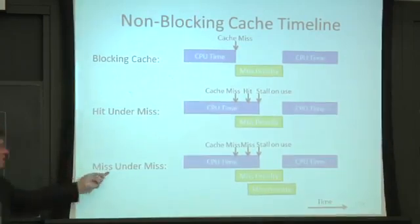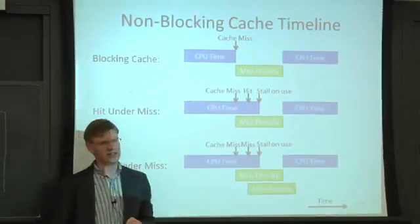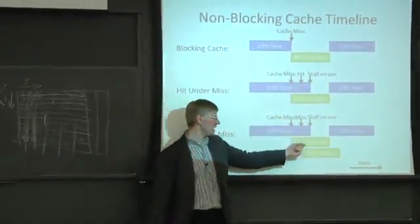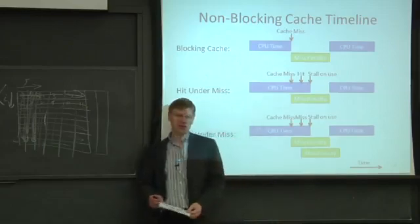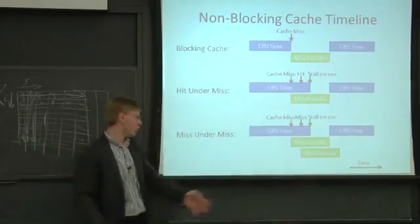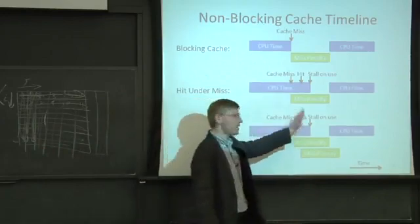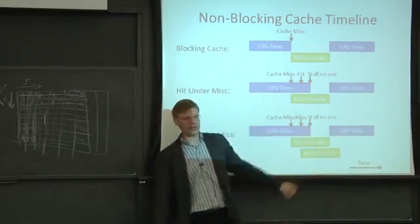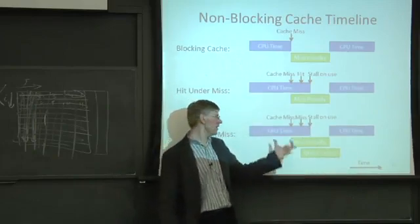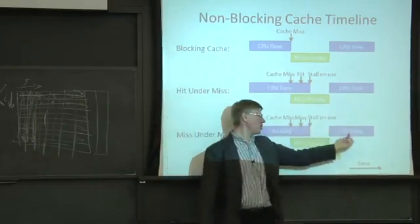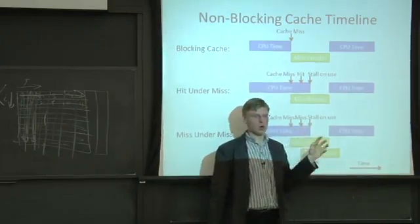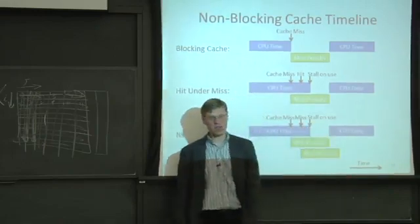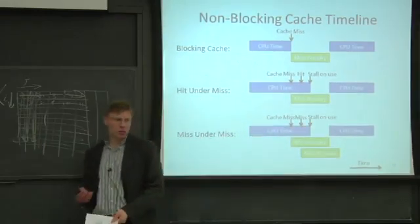Something else we can do is miss under miss. We're executing along, we take a cache miss, and send something out to the main memory system to go get the data. We don't stop executing; we keep executing, take another miss, and send that out to the main memory system too. At some point we may go to look at the data, or possibly the CPU just keeps executing the whole time, overlapping multiple memory accesses with computation. This can be really powerful.